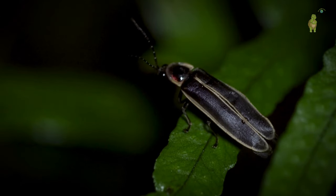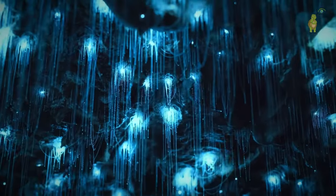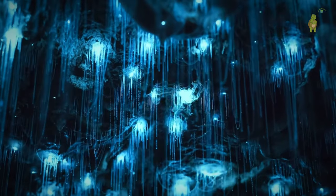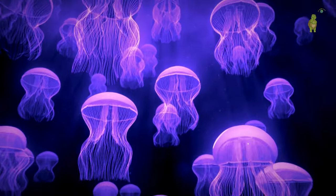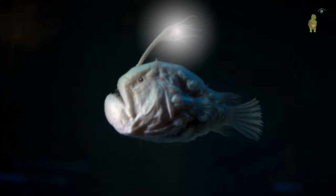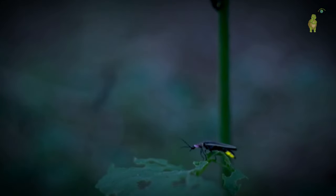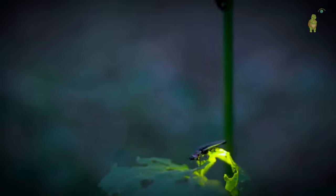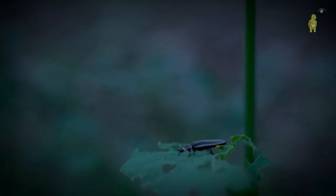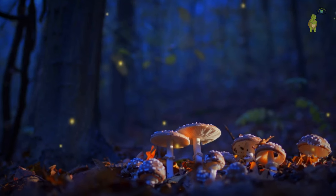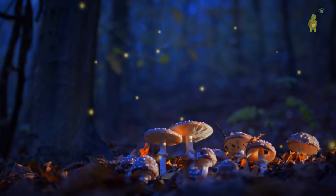But why do fireflies exhibit this behavior? Bioluminescence serves several evolutionary purposes, such as helping certain marine species lure prey or acting as a defense against predators. Sarah Lewis explains that fireflies, being beetles, have juvenile fireflies living underground. Firefly light likely evolved as a warning, like an insect shouting, Don't eat me, I'm toxic.